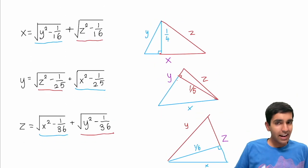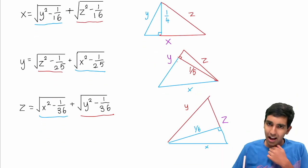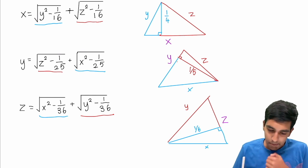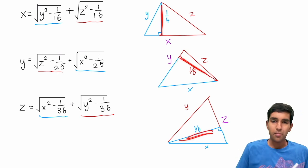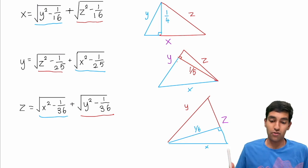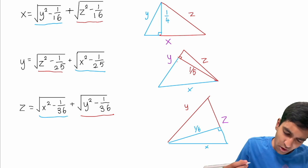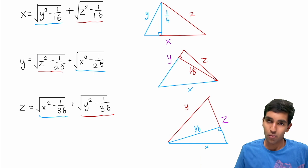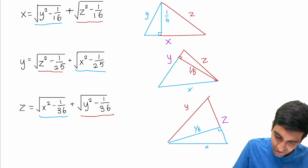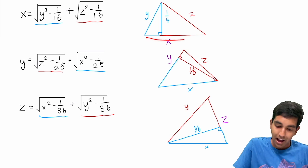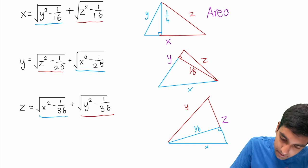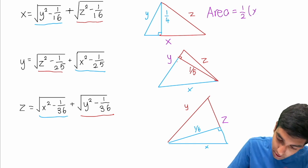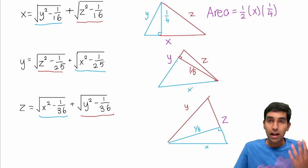We still have to find x, y, and z though. We found these triangles, which are nice, but how do we actually use them? We do know the altitudes, which you might think is random information, but it's actually really powerful. One thing to consider is area. We have a height and a variable for a side length, so we can write area equals one half times base x times height 1 over 4.